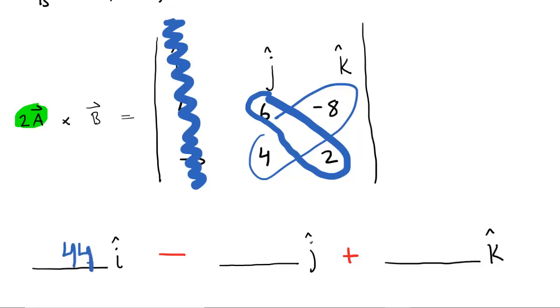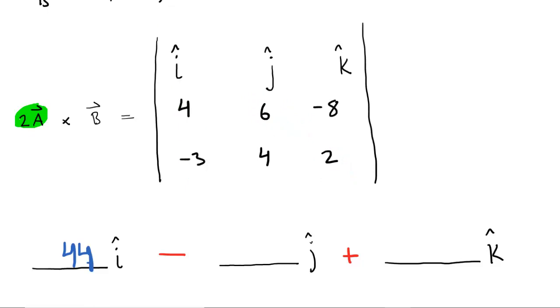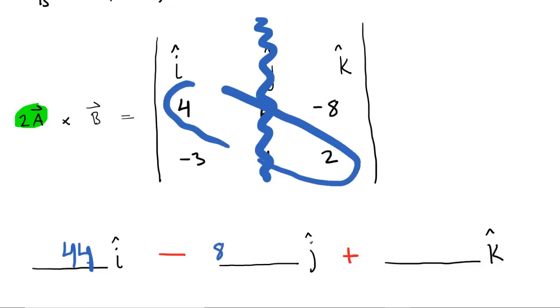We will next do the j hat. And since you're working at the j hat, what you'll do is cross off the column that has the j hat in it. And then what is left behind, you will compute the determinant. So here, if you cross multiply, you're going to have 4 times 2, which is 8. And then you're going to have negative 3 times negative 8, which is 24. And then subtract those two. 8 minus 24 is negative 16. Be careful here. You'll have a negative 16, but because of the built-in minus sign right here, the minus sign that we just computed will combine to actually form a plus sign. So just be cautious there. You're going to go back and actually change this to a plus sign.